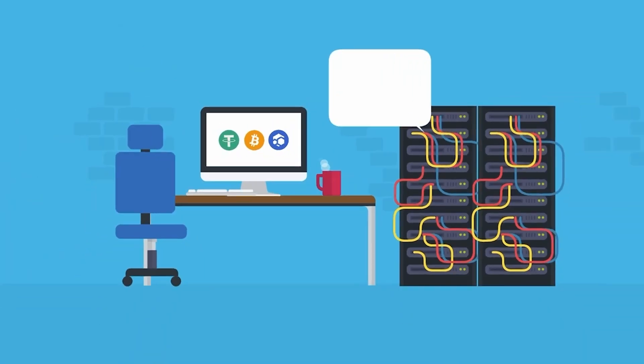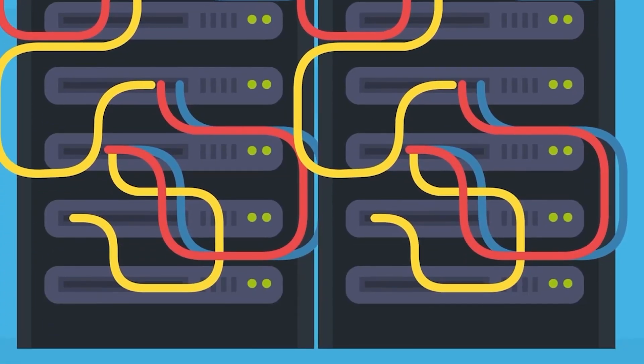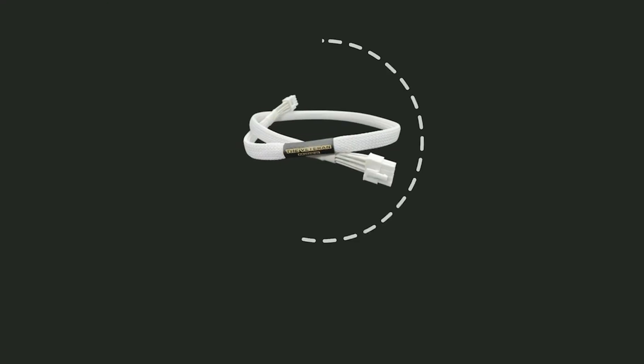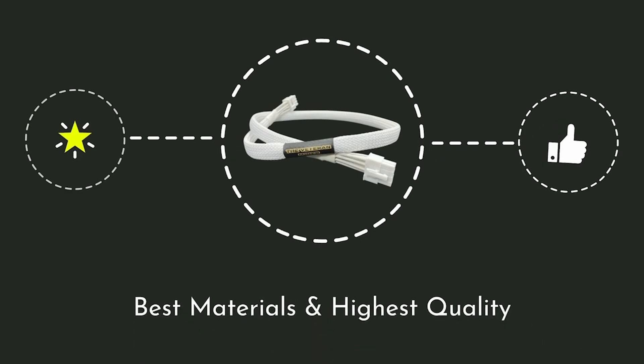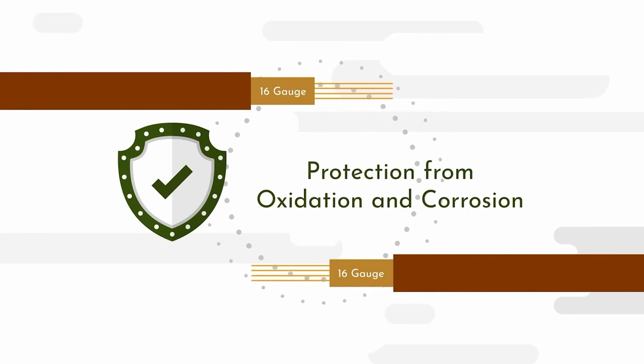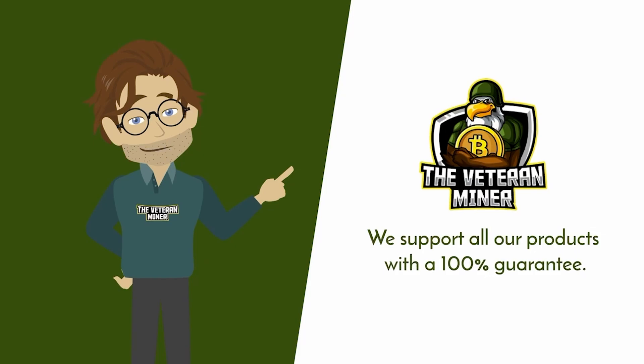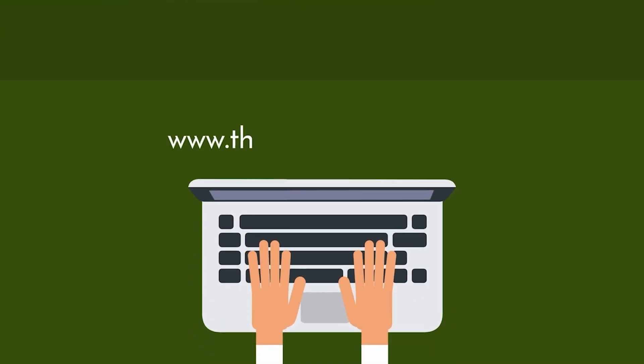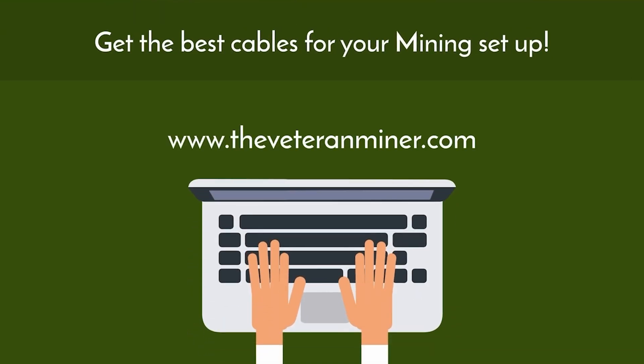Hey miners, Mining King here. Today we're going to be learning some tips and tricks about HiveOS. As a crypto miner, you want your equipment to be high quality. Proper cable management is part of your mining rig, and the Veteran Miner has you covered. Their cables are made of 16-gauge tin copper, ensuring protection from oxidation and corrosion, and they support their products with a 100% guarantee. Visit www.theveteranminer.com.